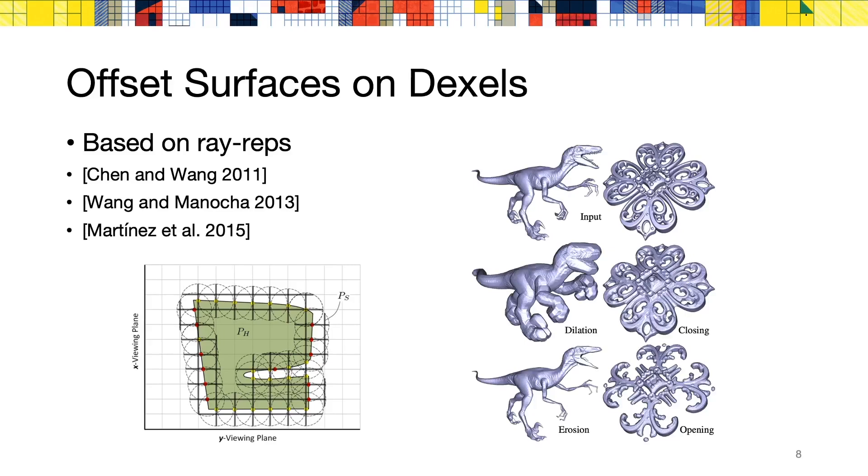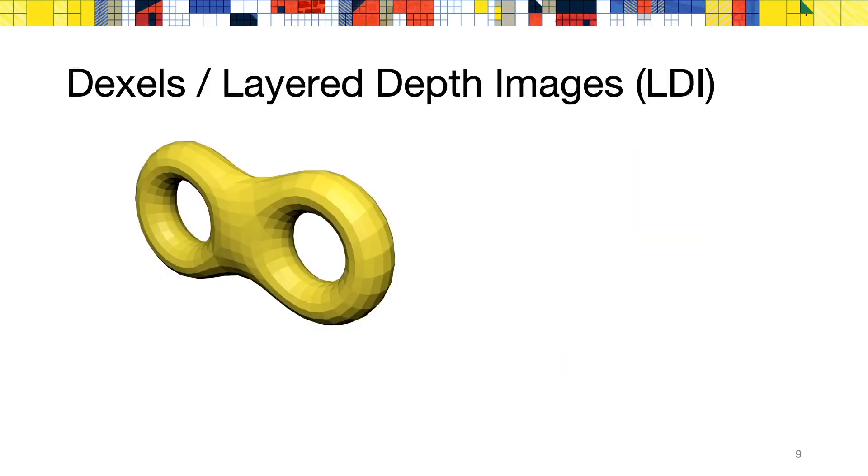In 2015, Martinez and Tal presented an offset method that approximates the result of the dilation by the Minkowski sum of a series of segments in multiple directions. Those approaches have in common that they operate on a discrete representation of the input volume called dexels or layered depth images.